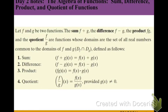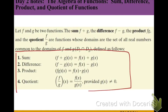Now let's consider doing operations with two functions. Suppose we have two functions f and g. We can find the sum, difference, product, and quotient of those two functions, and we can also find the domains of those new functions — they'll just be a combination of the domains of the two original functions. For the sum, f plus g of x, we add the two functions combining like terms. For the difference, f minus g of x, we subtract the second from the first. For the product, we multiply them together. For the quotient, f divided by g of x, we divide the first by the second, provided g of x does not equal zero.